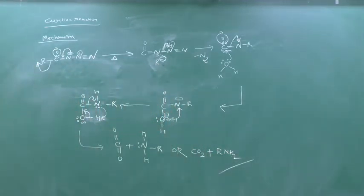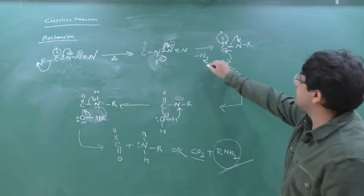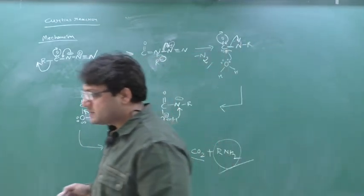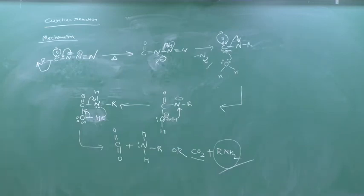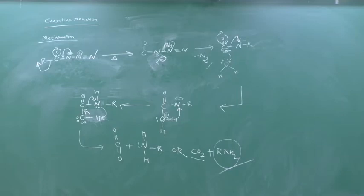So the products are primary amine R–NH₂, carbon dioxide CO₂, and nitrogen gas N₂. This is the mechanism of the Curtius reaction. Take a screenshot.